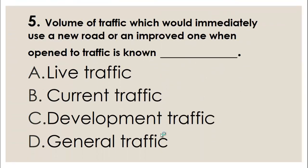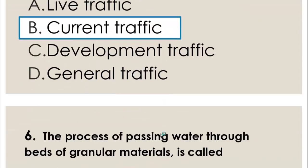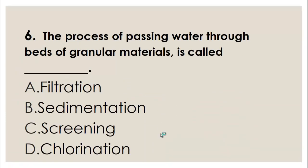MCQ number five: The volume of traffic which would immediately use a new road or an improved one when opened to traffic is known as — A) Live traffic, B) Current traffic, C) Development traffic, D) General traffic. The right choice for this question is B, current traffic.